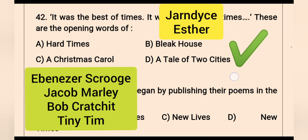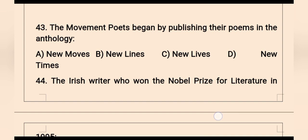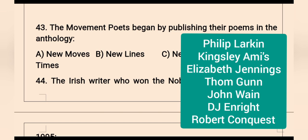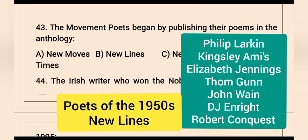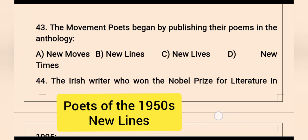Question 43: The Movement poets began by publishing their poems in the anthology — options are New Moves, New Lines, New Lives, and New Times. Movement poets in the anthologies include Philip Larkin, Kingsley Amis, Elizabeth Jennings, Tom Gunn, John Wain, D.J. Enright, and Robert Conquest. The movement produced two anthologies: Poets of the 1950s, edited by D.J. Enright, and New Lines, edited by Robert Conquest. The right option is New Lines.